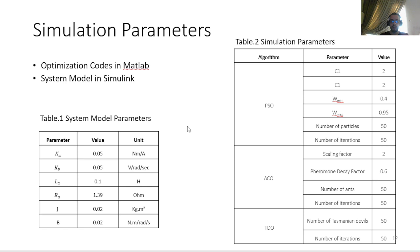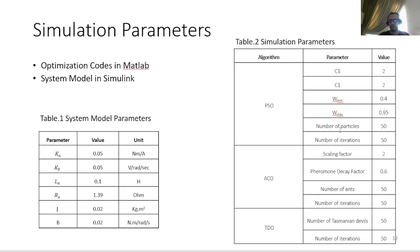For the simulations, MATLAB Simulink was used. The optimization codes were written in MATLAB and the system model was built in Simulink. The calculated PID parameters are input to the Simulink model to compute the output speed. The simulation parameters for the system model are shown, along with the optimization parameters for PSO, ACO, and TDO. For fair comparison, the same number of particles, ants, and Tasmanian devils — 50 each — and the same number of iterations were used for all three techniques.